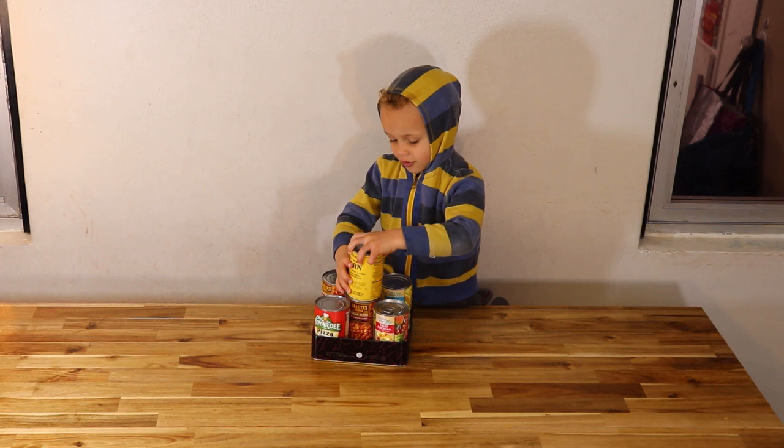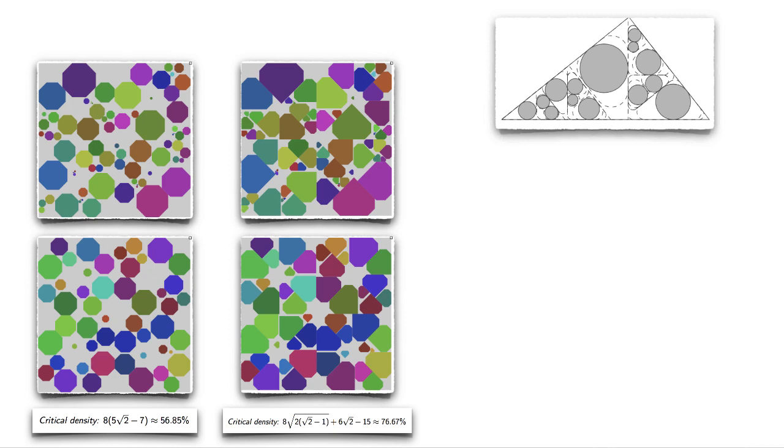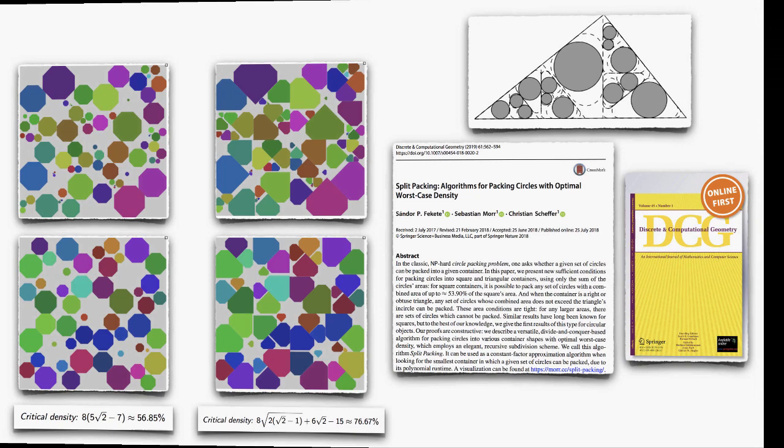The idea of split packing can be generalized for other objects and containers. Here are some examples of packing regular octagons or certain types of heptagons called rubies into a square or circles into a triangle. Full details can be found in a recent journal paper.